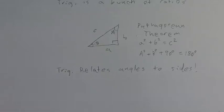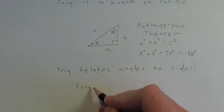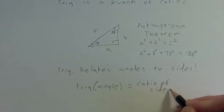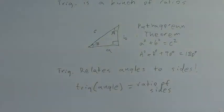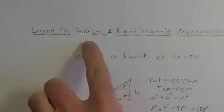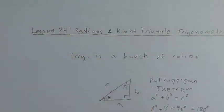Just remember, all a trig function does is give a ratio of sides. Your trig function takes an angle and gives you a ratio of sides. That's basically how it works. It completes the whole triangle for you, so that if you have two pieces of information — no matter what those two pieces are — you can find everything else you might need. As you saw from the title, it's radians and right triangle trigonometry, so first we need to talk about what radians are.